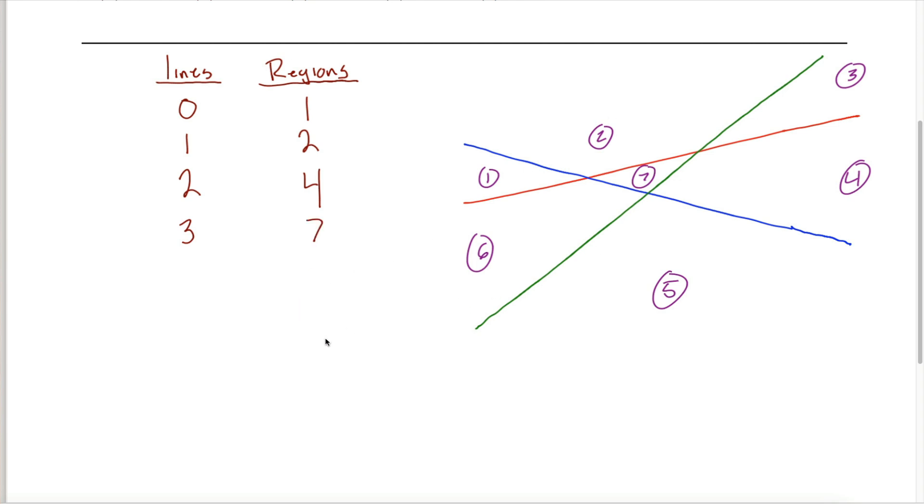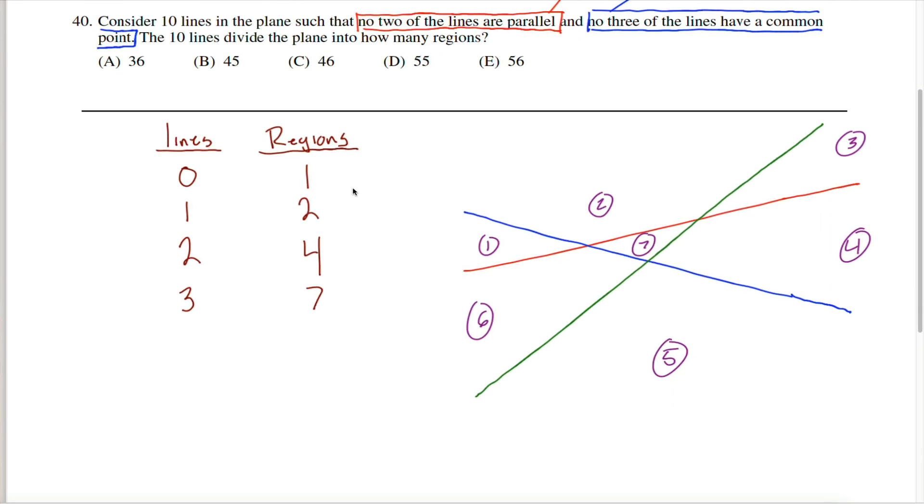Drawing that fourth line gets kind of messy. We can do it, and I will do it. But before we do it, it might be worth taking a look at these values and seeing if we can kind of guess at what pattern's going on here. If you've done much combinatorics, you might know to not just look at these values, but to kind of look at the difference in these values.